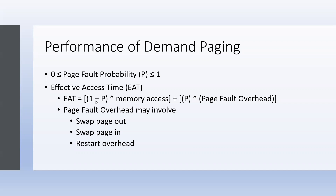We will calculate using this formula: Effective Access Time equals (1 minus P) multiplied by memory access time, plus P multiplied by page fault service time. Here, (1 minus P) represents the probability of no page fault, and P represents the probability of page fault multiplied by the page fault overhead.